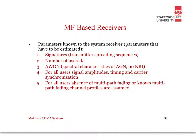For matched filter-based receivers, the parameters we know are: the signatures or spreading sequences, the number of users, the AWGN channel, the spectral characteristics of the additive Gaussian noise, and that there is no narrowband interference. For all users, we must have timing and carrier synchronisation. We also assume the absence of multipath fading, or that known multipath fading profiles are given. At Masters level, we would look into the case with multipath fading.